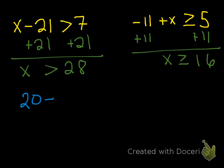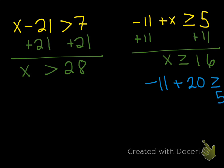Same thing with the second one. Let's pick a value greater than or equal to 16 — let's do 20. So negative 11 plus 20 is greater than or equal to 5. Negative 11 plus 20 is 9. Is 9 greater than or equal to 5? Yes, it is. So that is the correct answer.